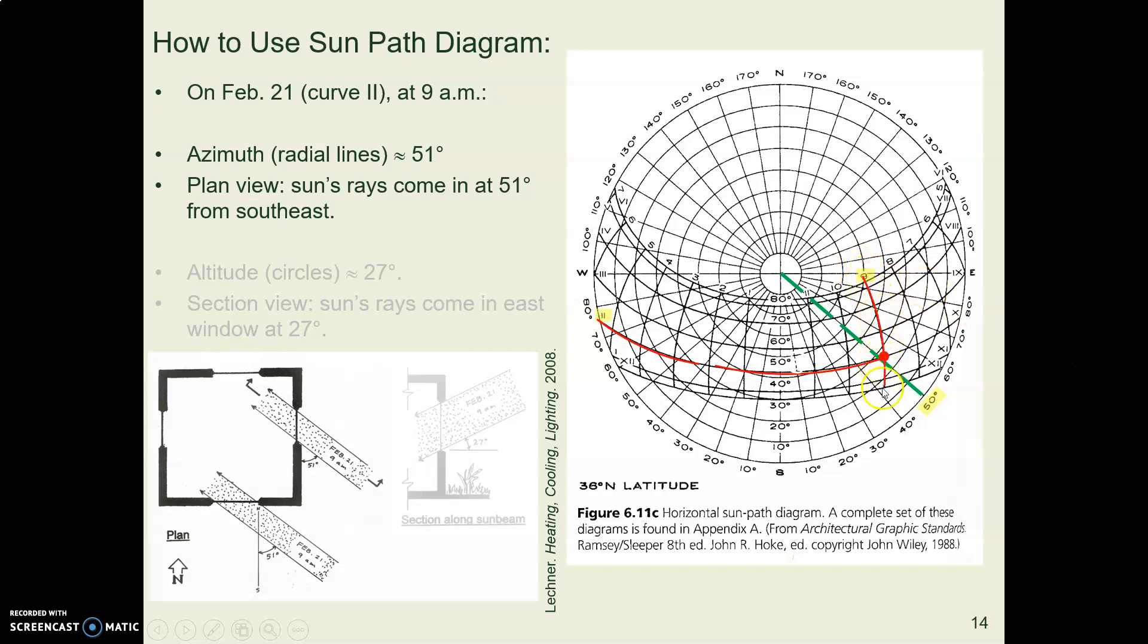So nine in the morning is this up and down line going down from the nine. The azimuth lines are these radial lines going straight out from the center, and if you look and see where does February intersect nine in the morning, it intersects just a little bit to the right of the 50 degree line.